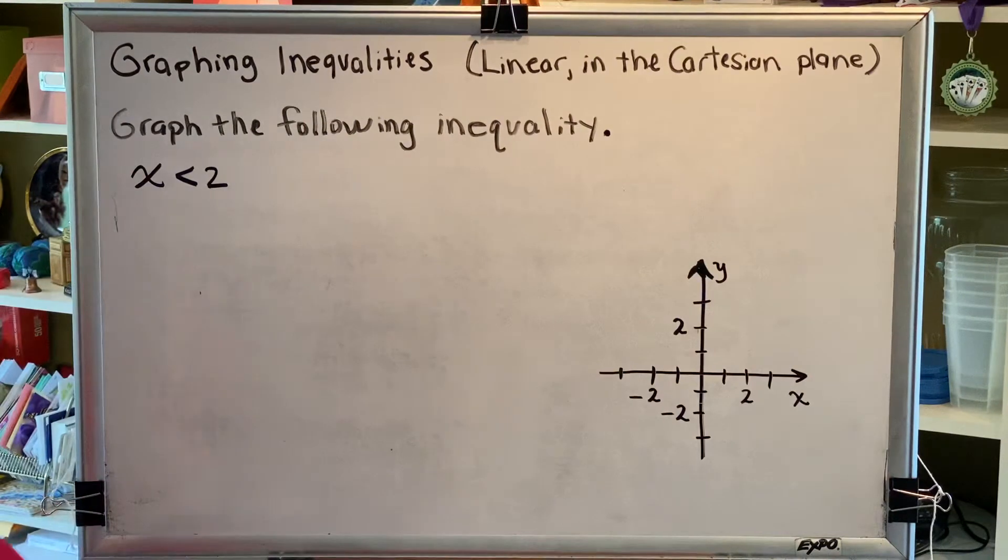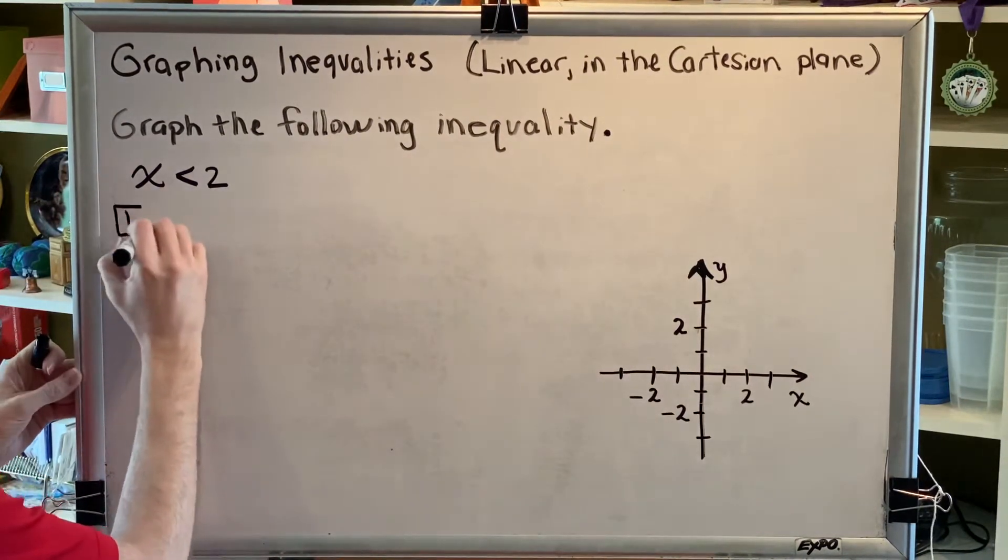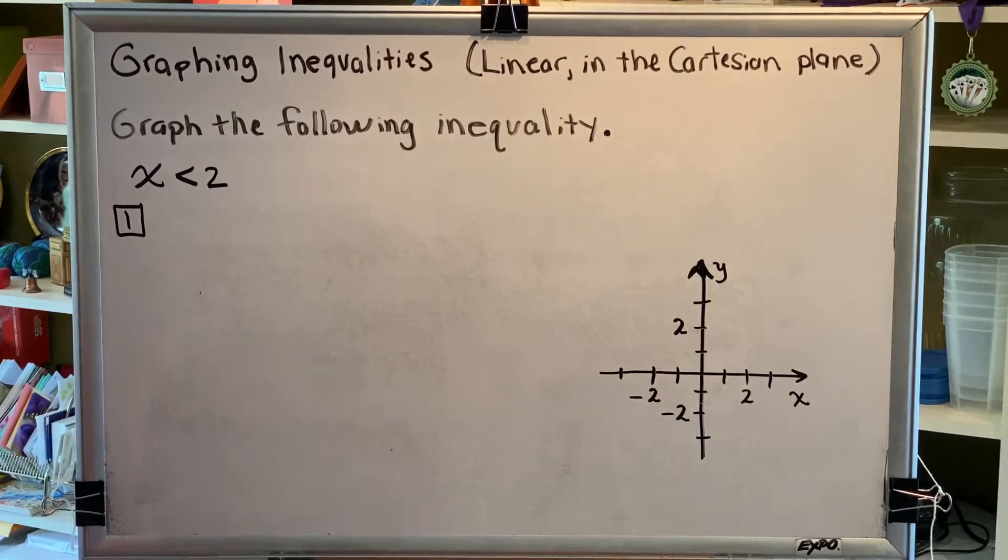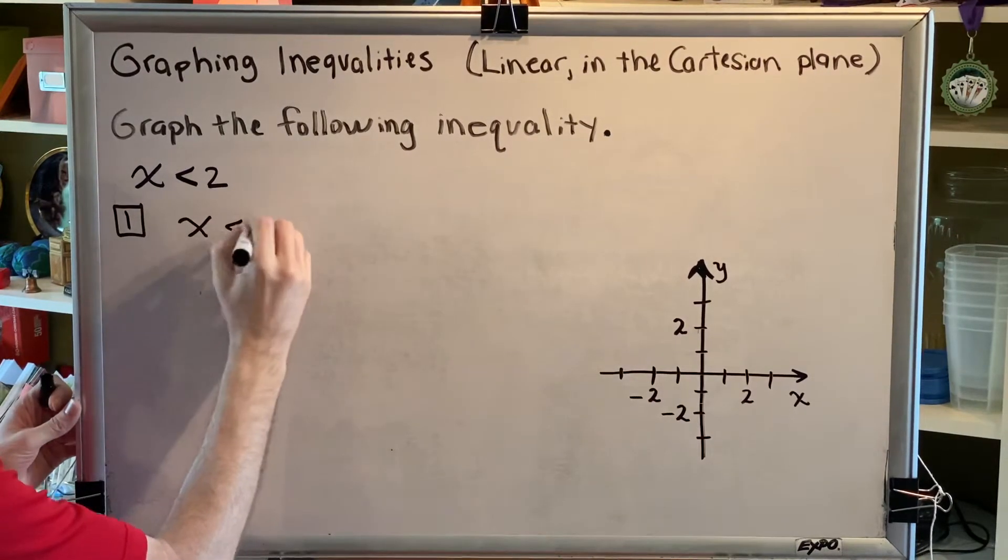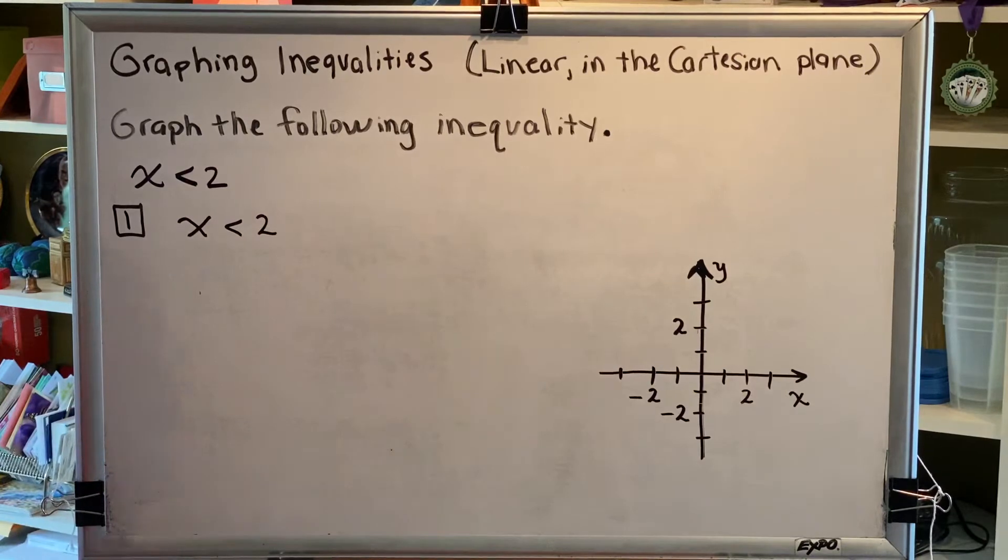Let's go through the steps together. Step 1, solve for y, if possible. Well, this inequality doesn't have a y, so we'll solve for x instead. And the good news is x is already alone on one side, so there's no actual work to be done here. Step 1 is already complete.